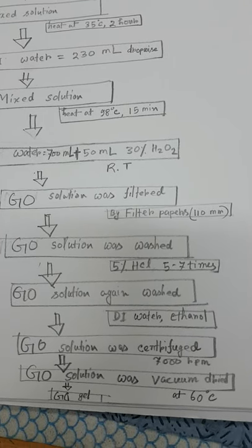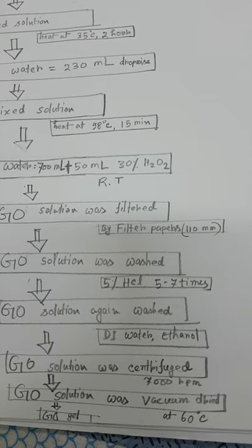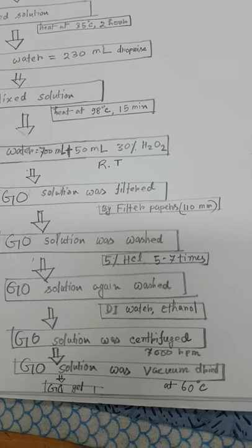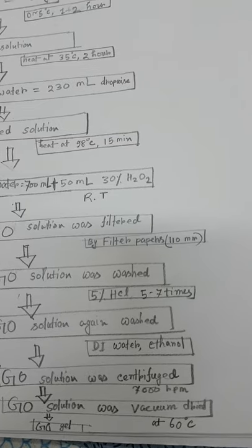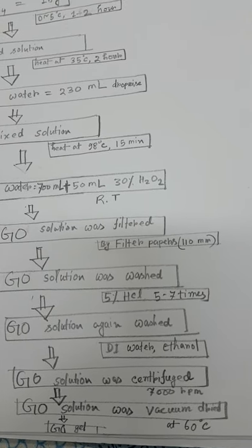It was followed by centrifugation at a rotation speed of 7000 rpm. Then it was dried at 60 degrees Celsius for 12 hours.